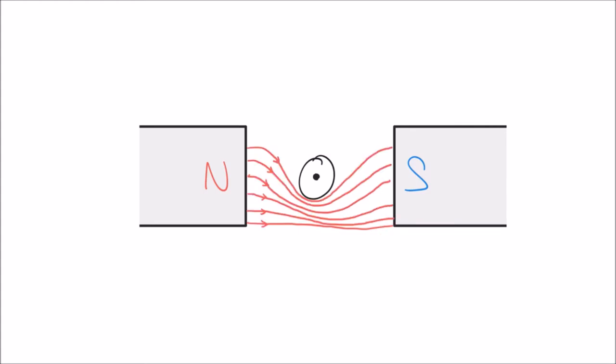Because we have two magnetic fields competing with one another, the field between the north and south pole becomes misshapen. Because the field has had to adjust itself to work around the field produced by the conductor, we get this distorted shape which produces a force on the wire — in this case, upwards. We can almost think of this like an elastic band or a catapult: we've created a lot of tension in the field lines, and that forces the wire out from between the two poles so the fields can return to their normal shape.